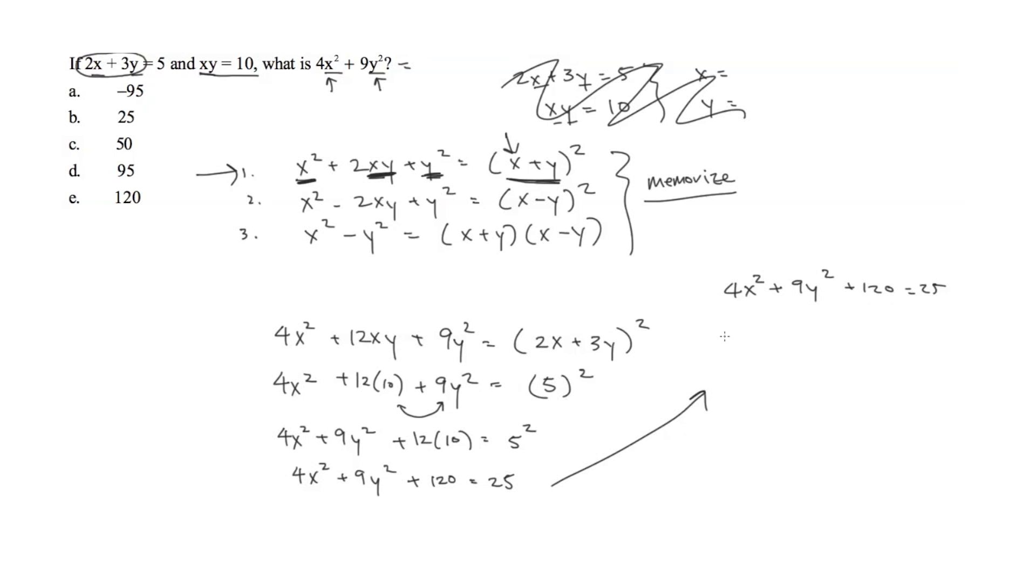If we subtract 120 on both sides, we are left with negative 95. And check out what we have here. We have 4x squared plus 9y squared, which is exactly what they're asking for. And we have that equals to negative 95. So the answer is A.